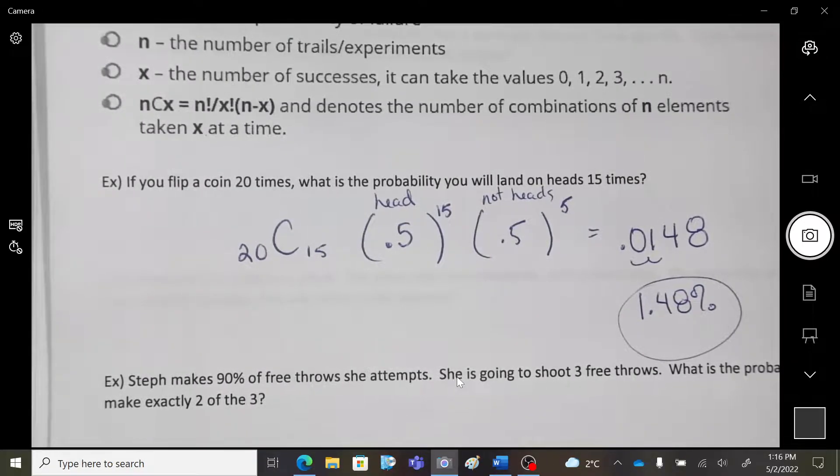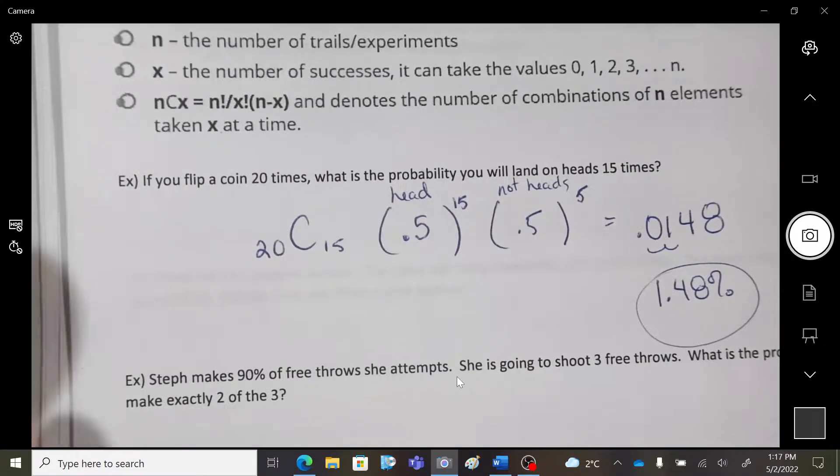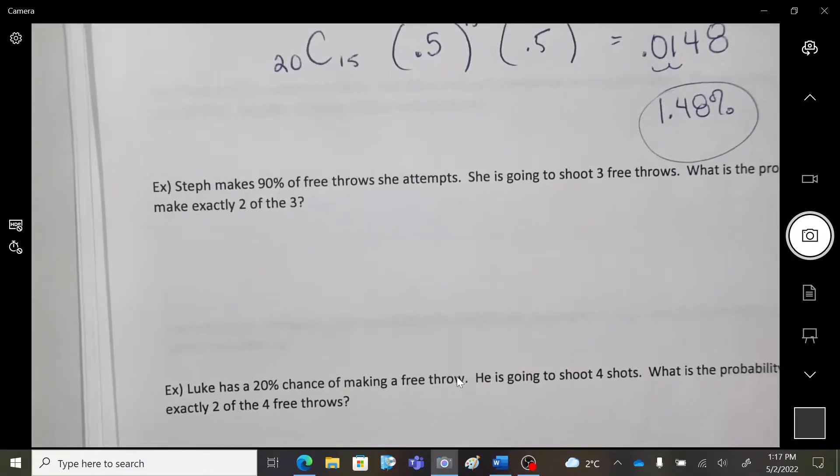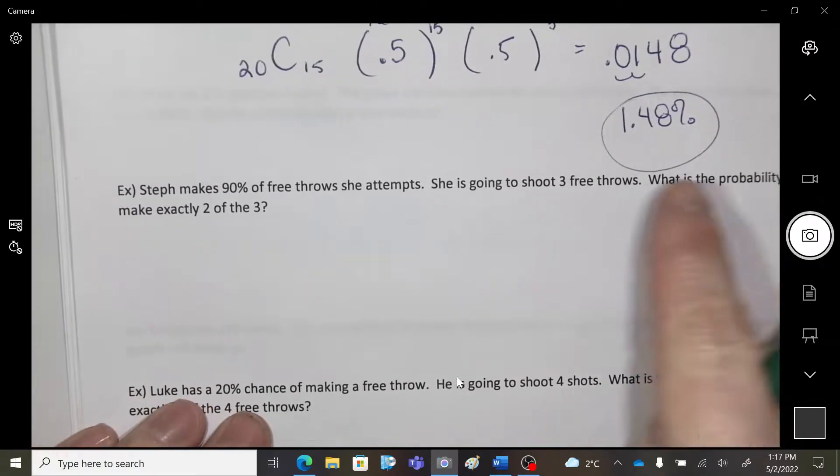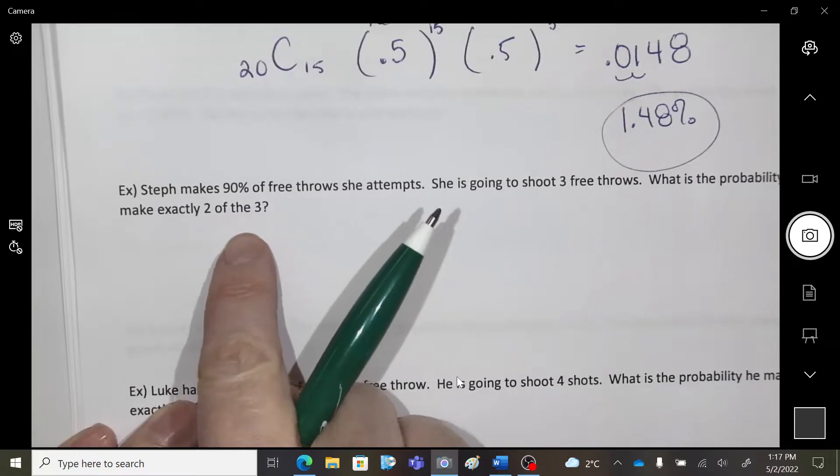What should you technically get? How many heads should you get? 10. Okay, so getting 15 is quite a bit. Okay, Stephanie makes 90% of her free throws. She's going to shoot three free throws. What's the probability that she's going to make exactly two out of three?